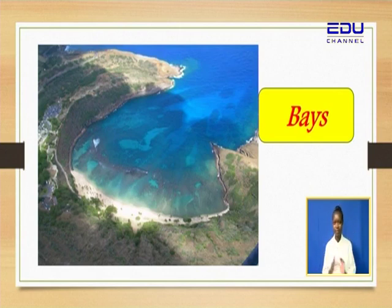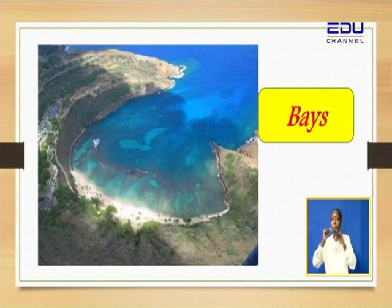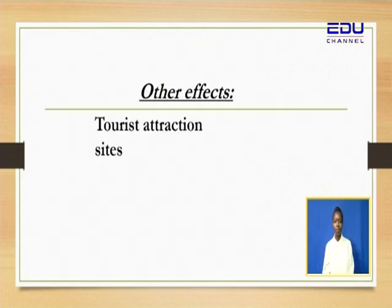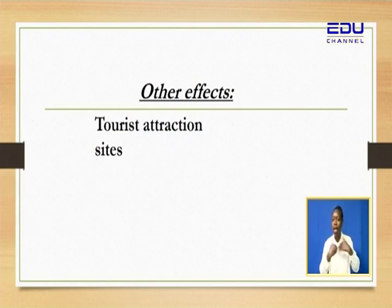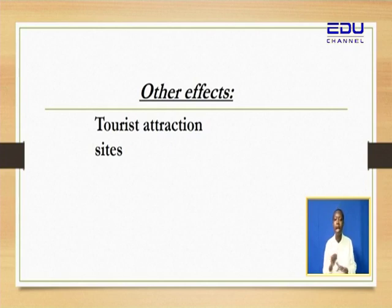That's when you use your digital devices — go and find out. What do we call the land that has been enclosed by water? So other positive effects include the creation of tourist attraction sites, especially when erosion creates beautiful sceneries that attract tourists — like Hell's Gate.